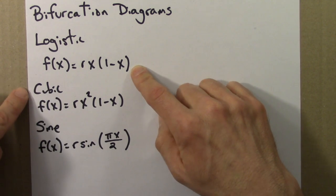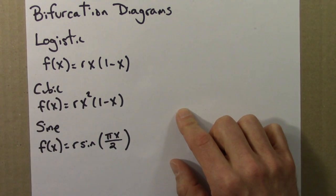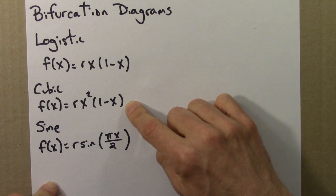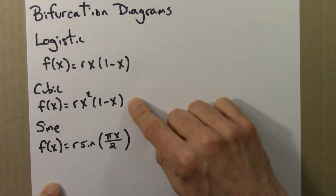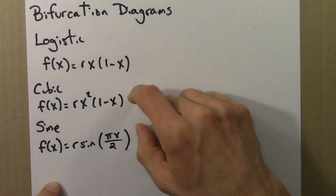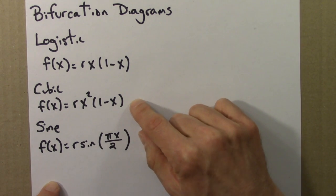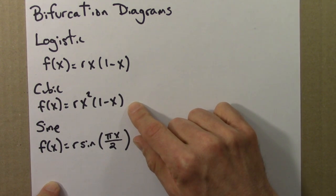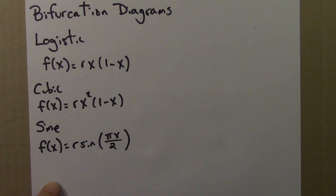Finally, let me just mention, you've probably suspected as much, that this cubic equation made the bifurcation diagram that appeared in the homework for unit 5, and this sine equation made the bifurcation diagram that appeared in the test for unit 5. So you haven't seen these formulas before, but you have seen the bifurcation diagrams before. Thank you.